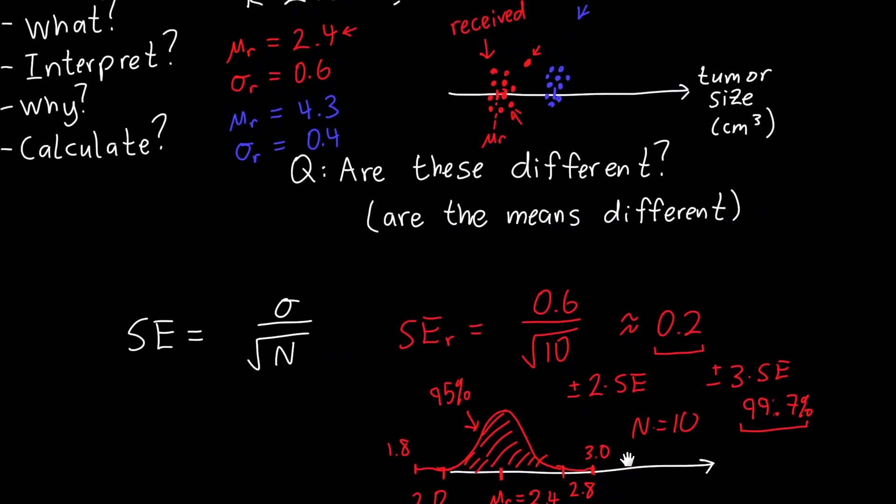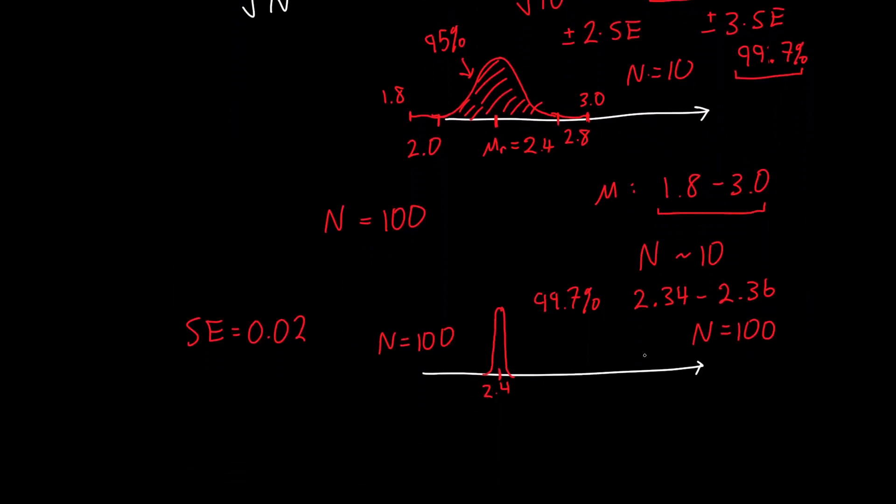If we were to draw in our placebo group, or the group that didn't receive the drug, they might look something like this if we have a large number of patients. The tumor size over here was 4.0. The standard error of this is also 0.02. We're almost completely certain that these are two different distributions. We could take this, go to the FDA, and say, look, we're almost completely certain that our drug works, could you please give us approval?